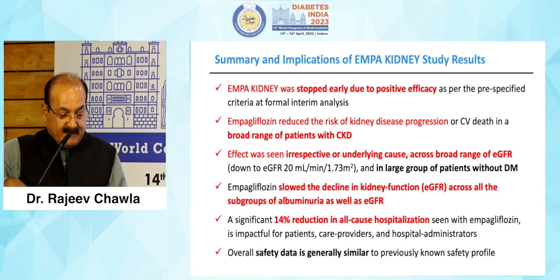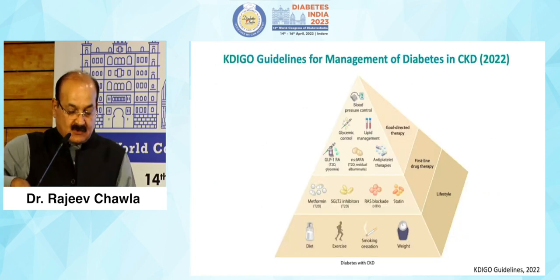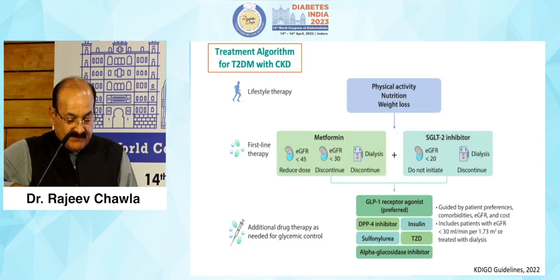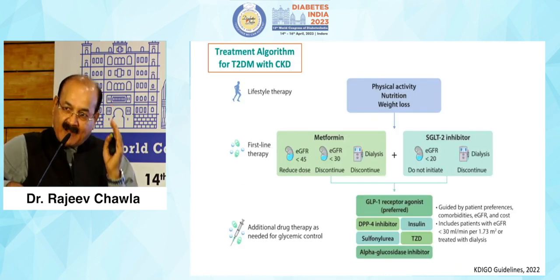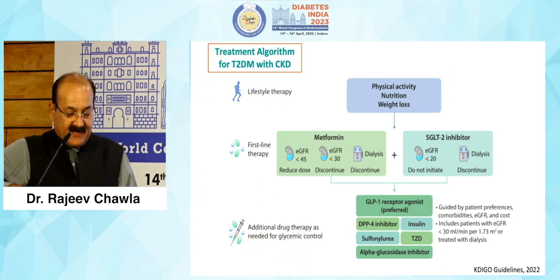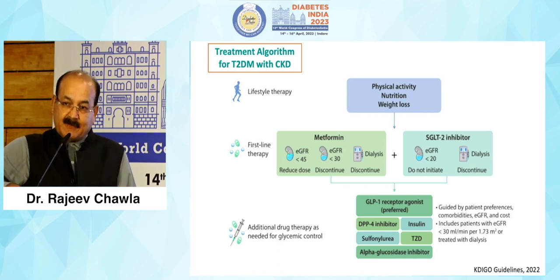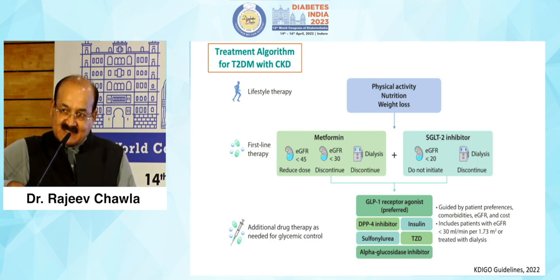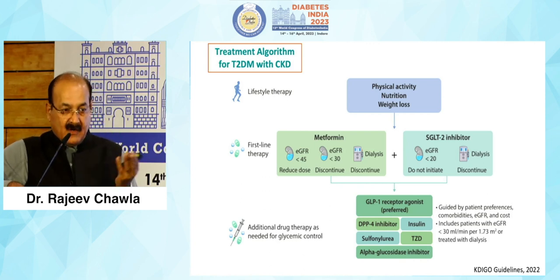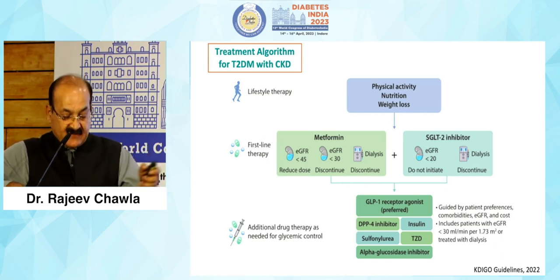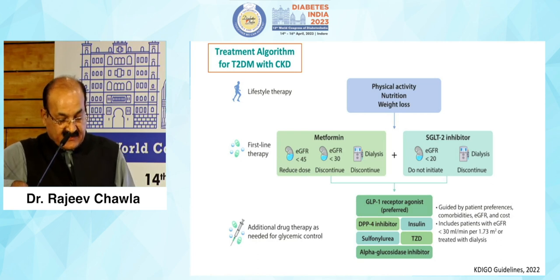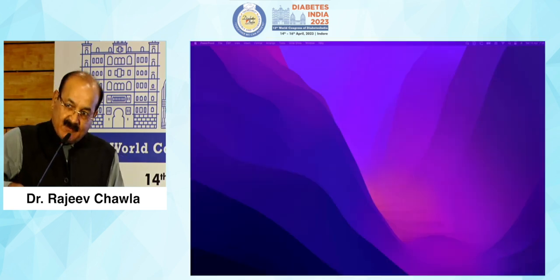EMPA reduced the risk of kidney progression or CV death across a broad range of CKD patients — 46 percent diabetic, 54 percent non-diabetic — with benefits seen irrespective of underlying cause: IgA nephropathy, hypertensive nephropathy, diabetic kidney disease, or CKD alone. EMPA also slowed the chronic decline in kidney function. Today, the 2022 KDIGO guidelines recommend that in all CKD patients, lifestyle modification is important, and for reduction in eGFR, patients should be on metformin or SGLT2 inhibitor, with the SGLT2 cutoff now down to eGFR less than 20.